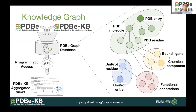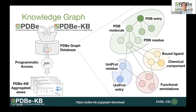Each week we receive both structures and annotations from partner resources. We have developed a graph database based on Neo4j technology, which contains a representation for PDB structures but also links to sequence information from UniProt, annotations from UniProt, and functional annotations from our partner resources. This knowledge graph allows you to traverse all these different entities and query them to derive knowledge. We then make the database available using APIs and have developed what we call aggregated views.